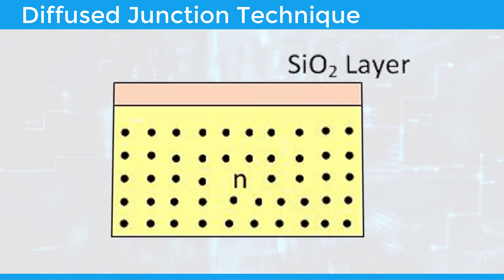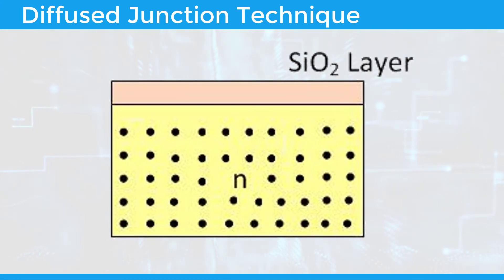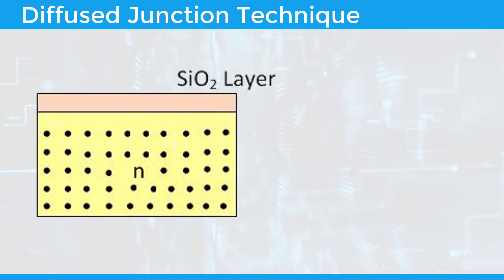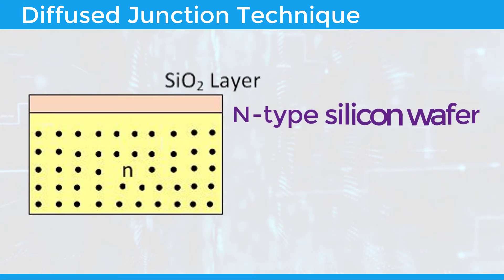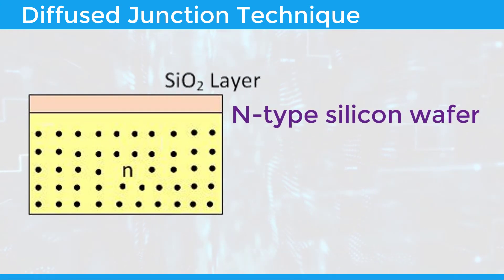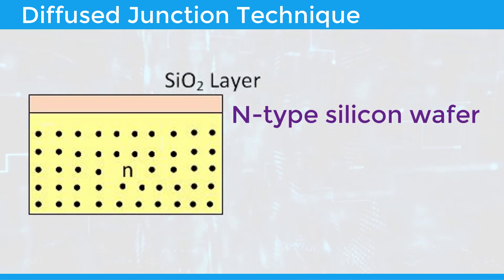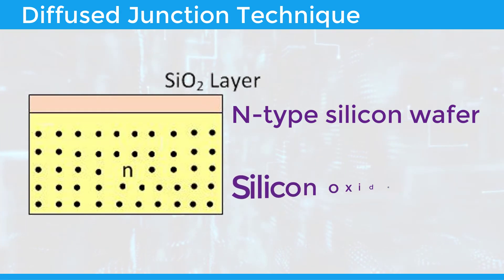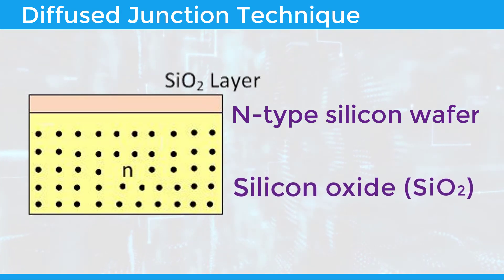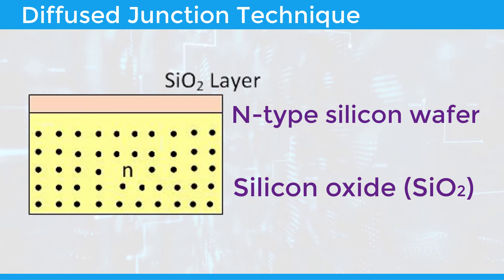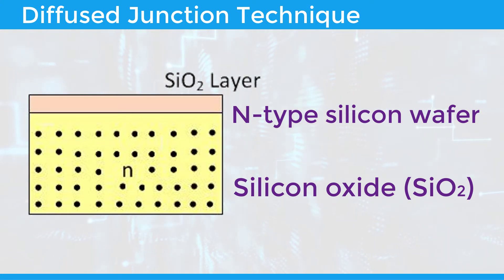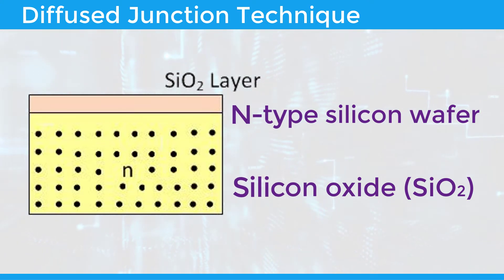The diffused-type silicon transistor is shown here. The N-type silicon wafer is used for making the collector terminal. On the surface of the silicon wafer, silicon oxide is grown. Silicon dioxide is an insulating material which does not allow impurities to enter through it.